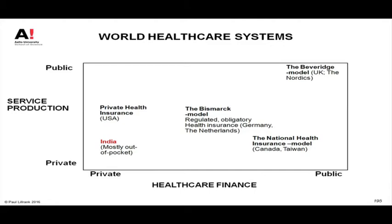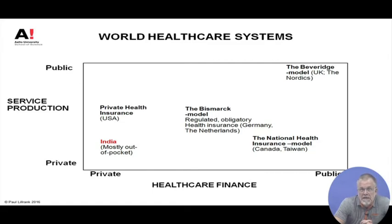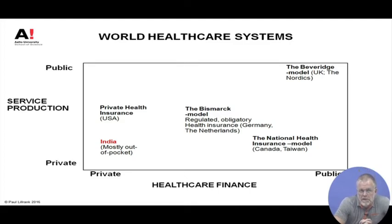Seventy-five percent comes from the tax finance system. In the United States there are many different systems, but the largest part is private insurance — typically employer-paid. In Central Europe there is the Bismarck model, founded by the German statesman Bismarck, which is based on private insurance companies competing among themselves for individual citizens' business. In the Bismarck model, the insurance companies are heavily regulated.